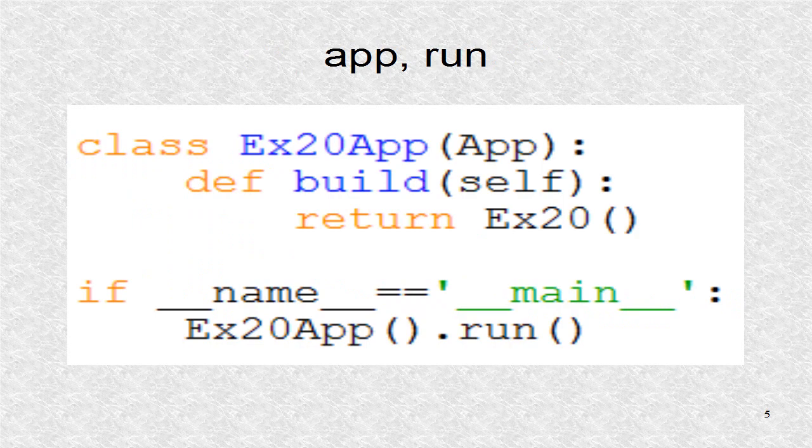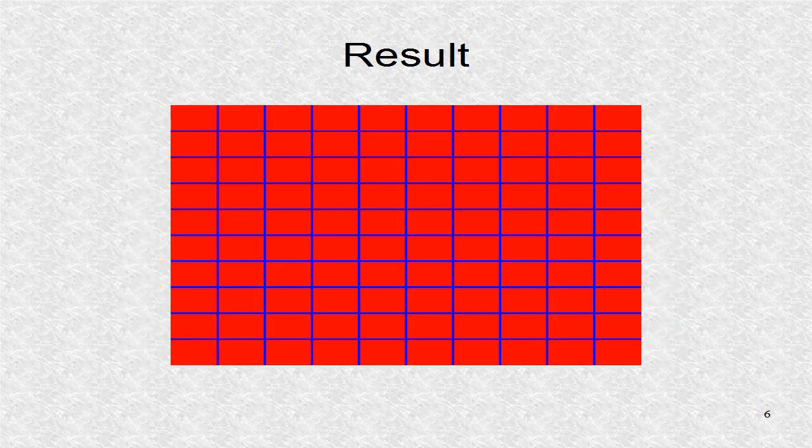The app class is created and run. This is the result of the execution. Due to the lines, we create a grid, and we can click at any point and see the Python console.